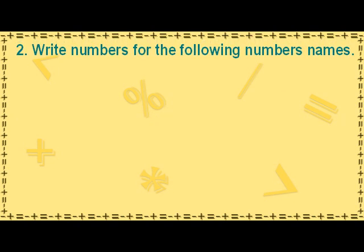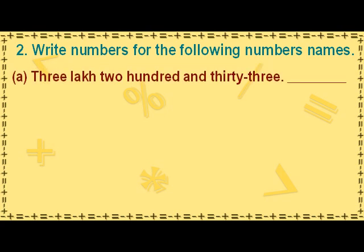Write numbers for the following number names. The first number will be written as: the digit 3 in the lakhs place value, the digit 0 in the ten thousands place value, the digit 0 in the thousands place value, the digit 2 in the hundreds place value, the digit 3 in the tens place value, and the digit 3 in the ones place value.